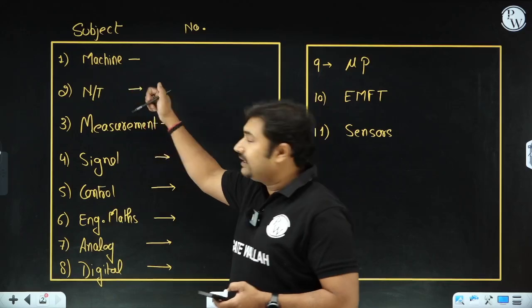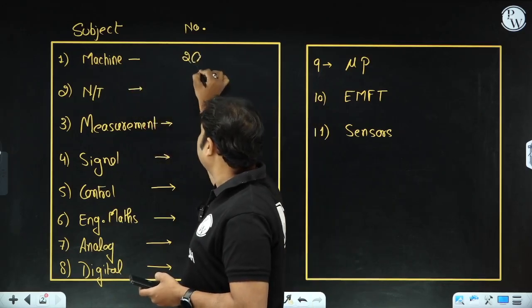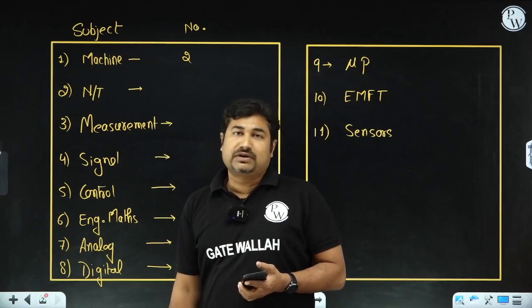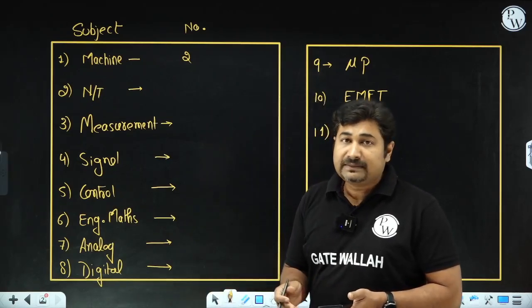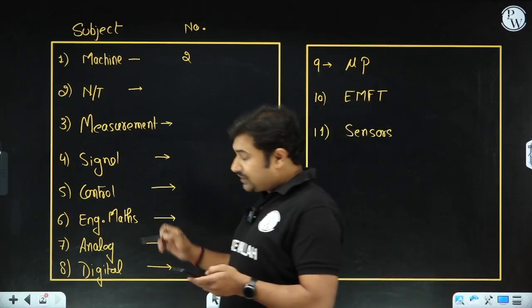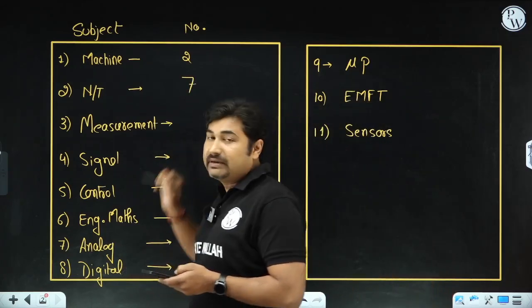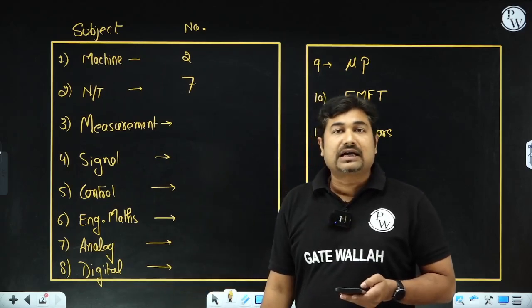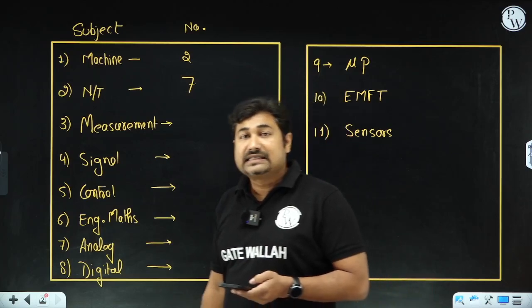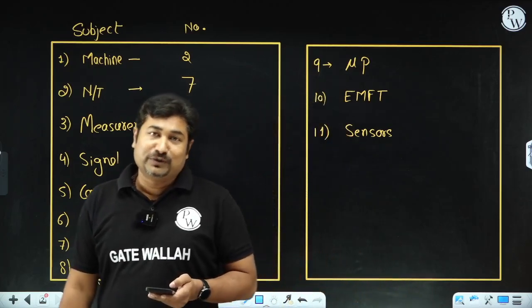If we talk about machines, then two questions are asked from machines and they are very simple questions, directly formula based. One is from the transformer and other from the induction machine, simple speed control. Network theory has seven questions asked and all the questions are correct. It will be very easy to solve those questions if you have attended the classes.